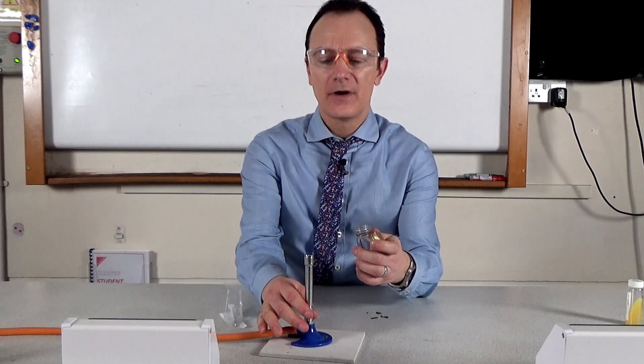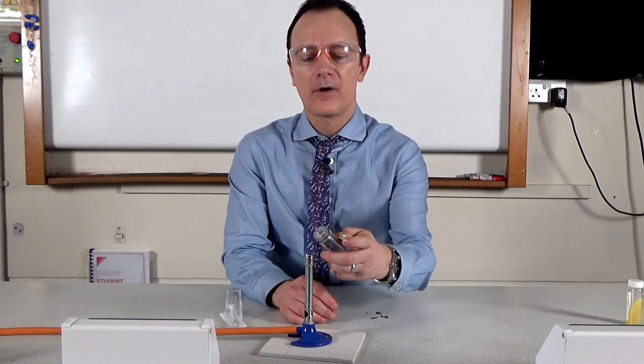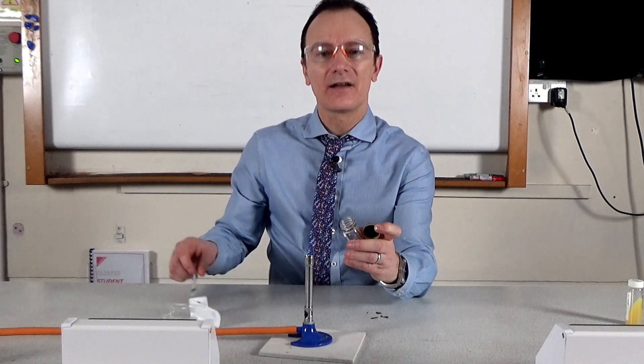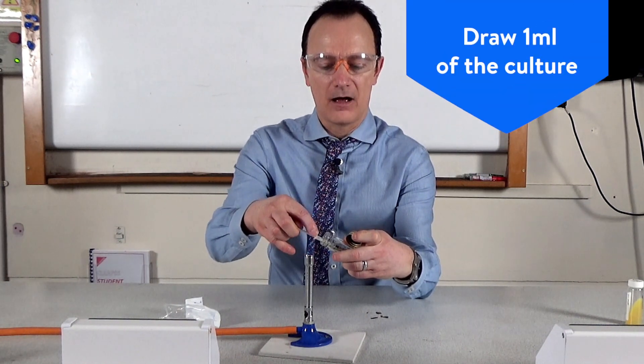We then turn the Bunsen burner to the blue flame and flame the neck of the bottle, making sure we're twisting it. Then using the sterile syringe, we draw up one milliliter of the culture.